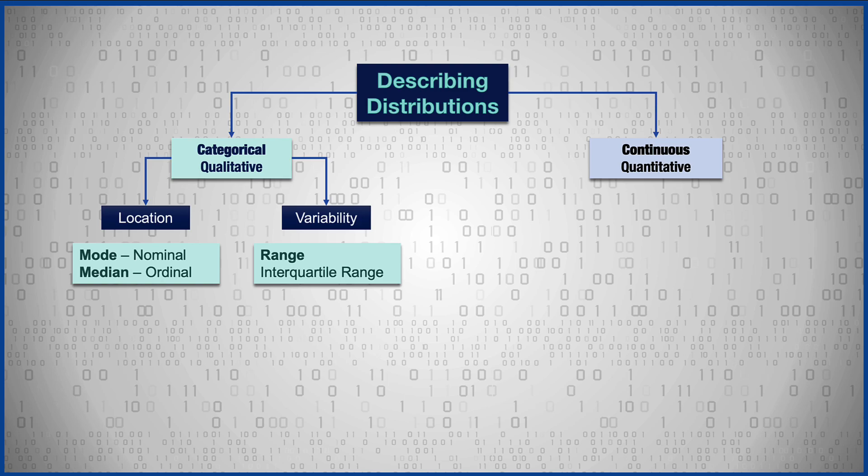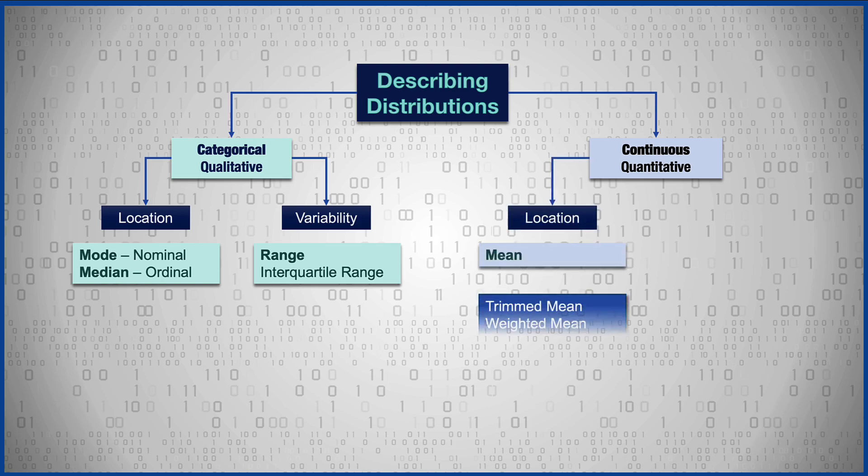When we have continuous quantitative scale-level data, to measure location we will use the mean. However, there are other options, and so we will learn about the trimmed mean, weighted mean, and geometric mean, and when we would choose each.